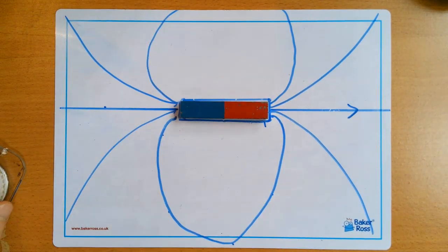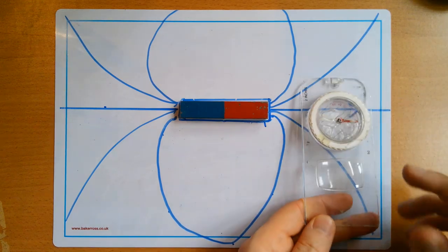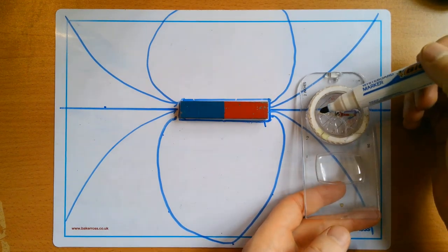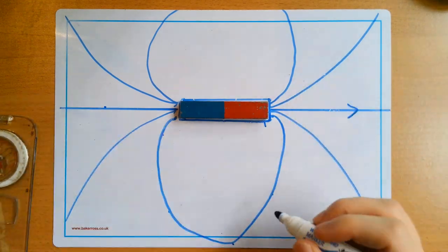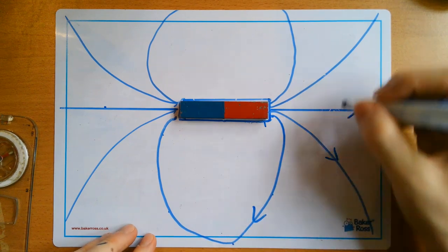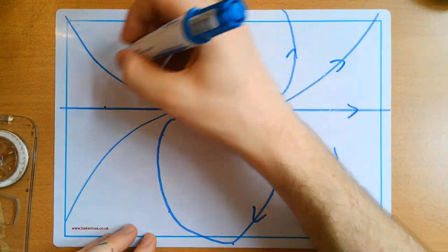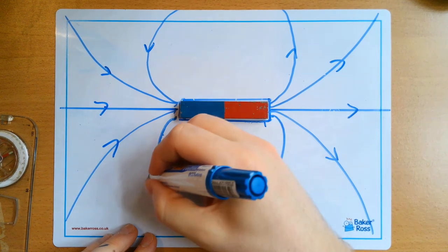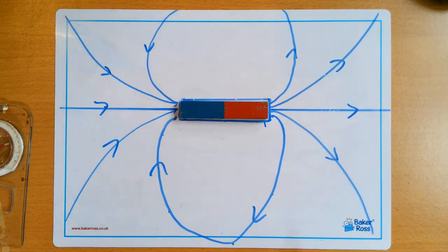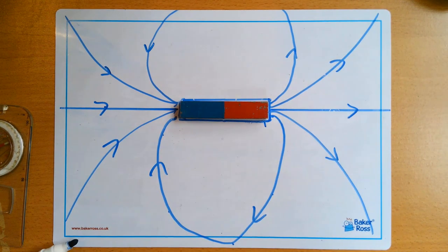And I know which end is north because if I put the magnet on, the south pole of the magnet attracts here, which means that's the north. And the field lines go from north into south. And that is our two methods for finding the shape of a magnetic field.